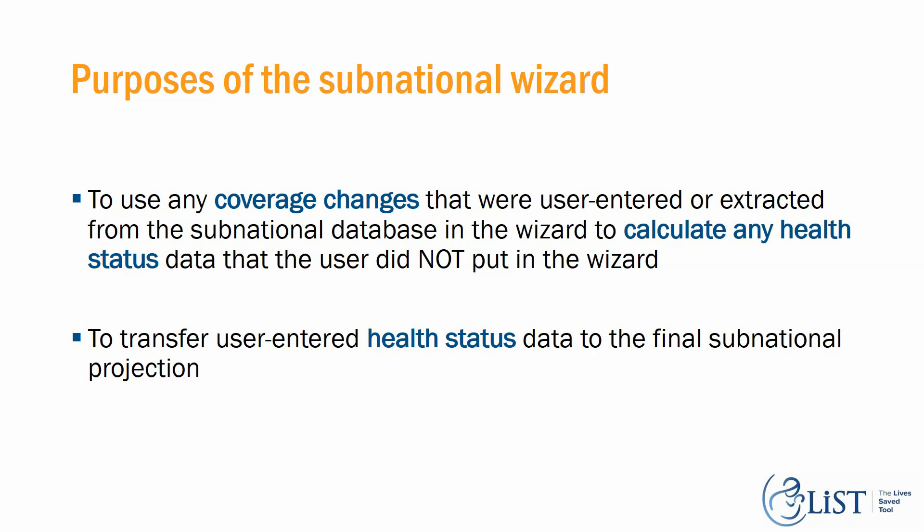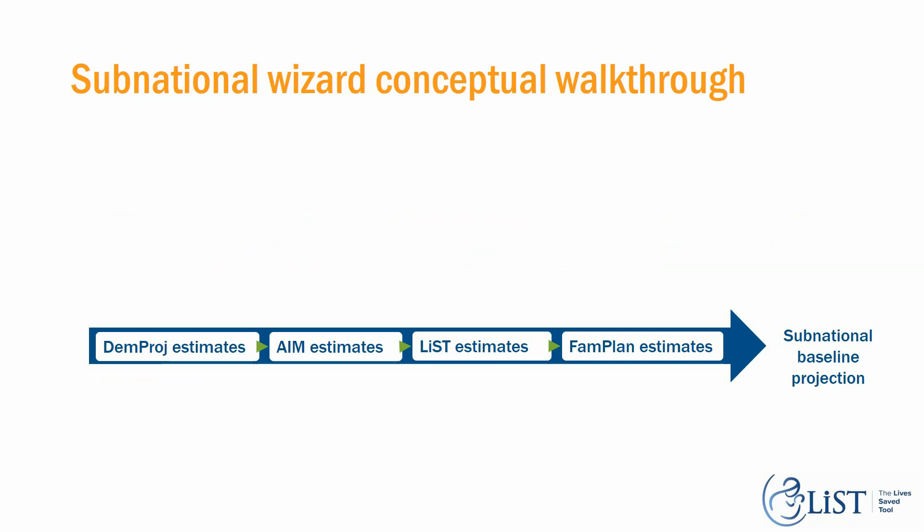We also use the wizard to transfer user-entered health status data into the final subnational projection. The subnational wizard conceptual walkthrough first starts with DEM-proj estimates, then moves to AIM estimates, then LIST, and finally Family Planning. When you're done with the wizard, you'll have a subnational baseline projection.